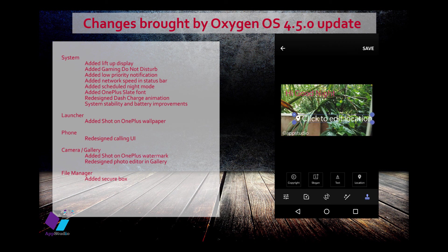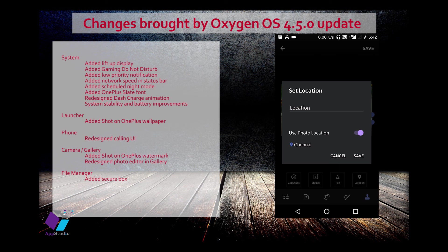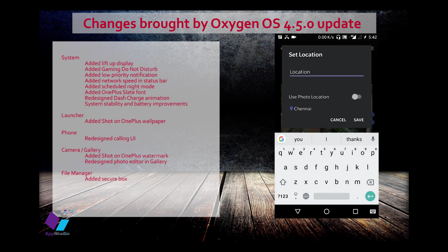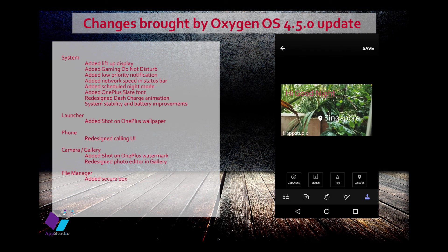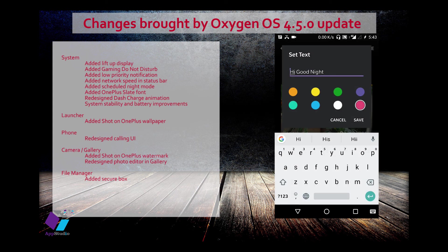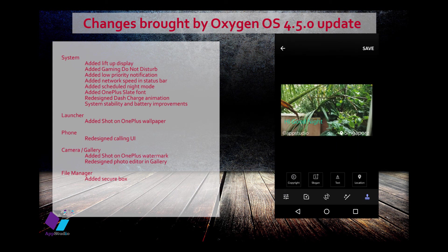You can also add a location to your image. The default location is your phone's location or the photo's captured location. If you want to change it, just turn off the default and type any other location, then save it. That's a wonderful feature.